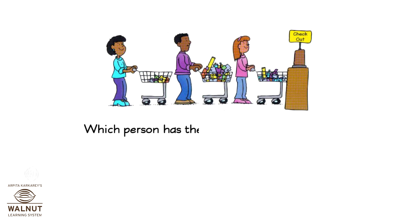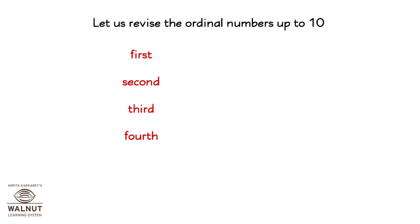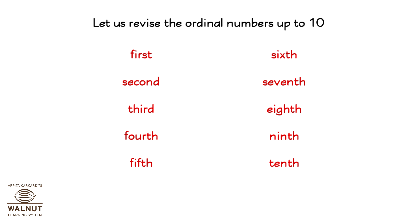Which person has the most stuff in the cart? The second one. Now, let us revise the ordinal numbers up to 10: 1st, 2nd, 3rd, 4th, 5th, 6th, 7th, 8th, 9th, and 10th.